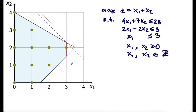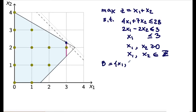Adding the constraint x1 ≤ 3, the new LP relaxation has its optimal solution at a new corner. We identify the basic and non-basic variables: x1 is positive, x2 is positive, so both are basic variables. Since we now have three inequality constraints, we need three basic variables. The third is the slack variable for the inactive constraint at the optimal point — the second constraint — so the basic variables are x1, x2, and s2.